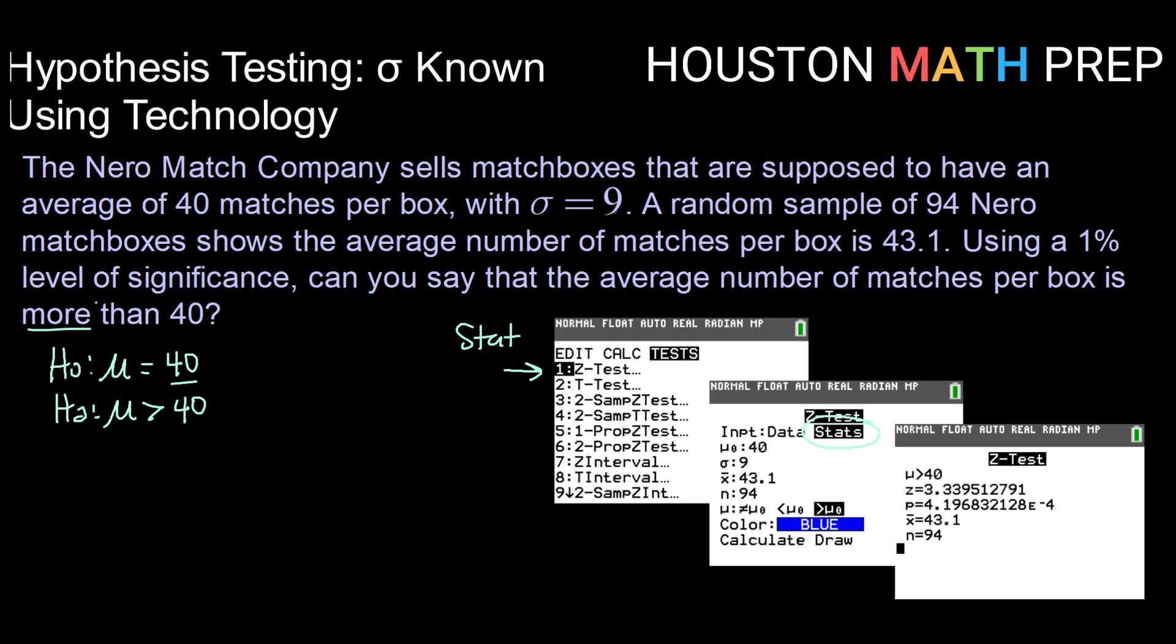My sigma is given here in the problem as 9. x bar is your sample mean, in this case 43.1, and your n is how many in your sample, in this case 94. Looking at my alternative hypothesis, I have a greater than symbol, so I want to toggle over to my greater than symbol here, and then when I hit calculate, this screen pops up on my calculator.